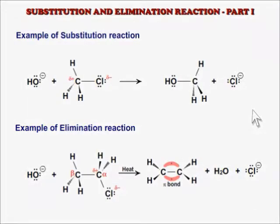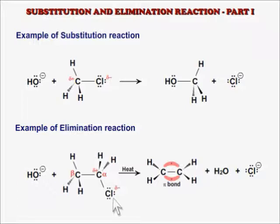Substitution and elimination reactions are typical reactions for alkyl halides. Here, halogen acts as a leaving group, and there is cleavage of the carbon-halogen bond in both substitution and elimination reactions.